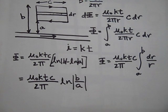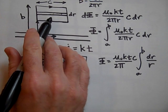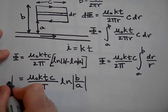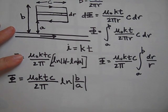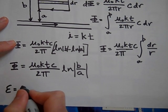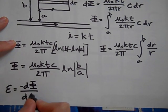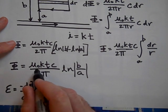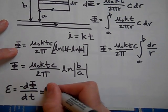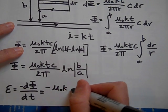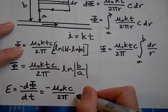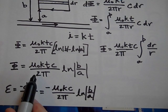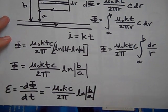Now can you tell me what the EMF induced will be? The EMF is just the rate at which the flux is changing with time, so we take the derivative with respect to time. You can pull everything except t out, and the only thing changing with time is t, so dt/dt = 1. The result, with the negative sign, is EMF = -μ₀kc over 2π times the natural log of b over a.